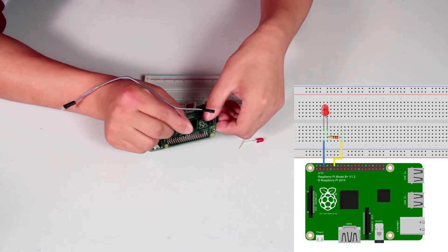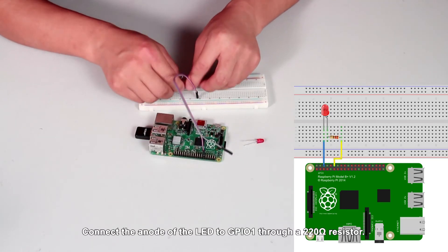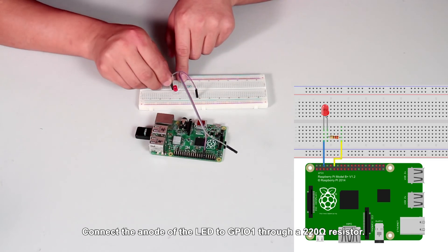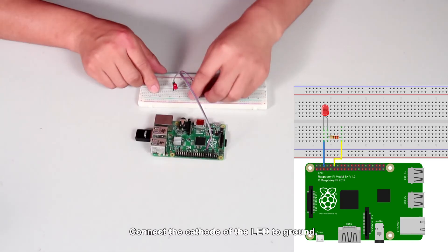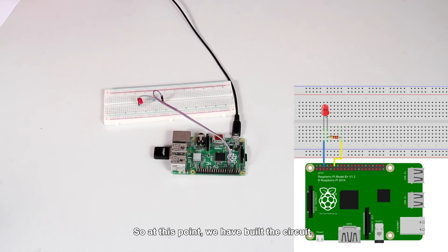Let's build the circuit. Connect the anode of the LED to GPIO1 through a 220 ohm resistor. Connect the cathode of the LED to ground. So at this point, we have built the circuit.